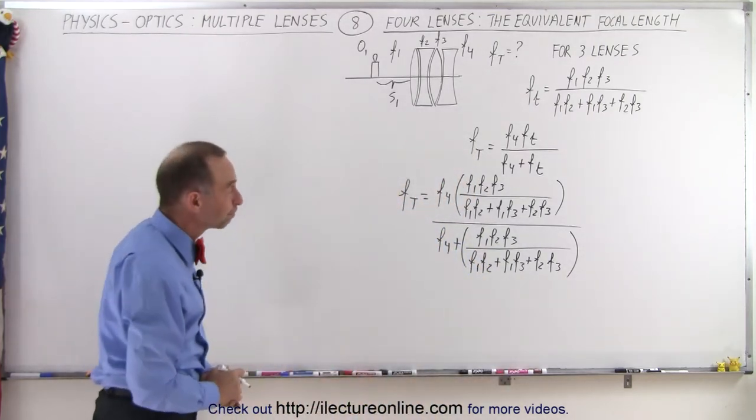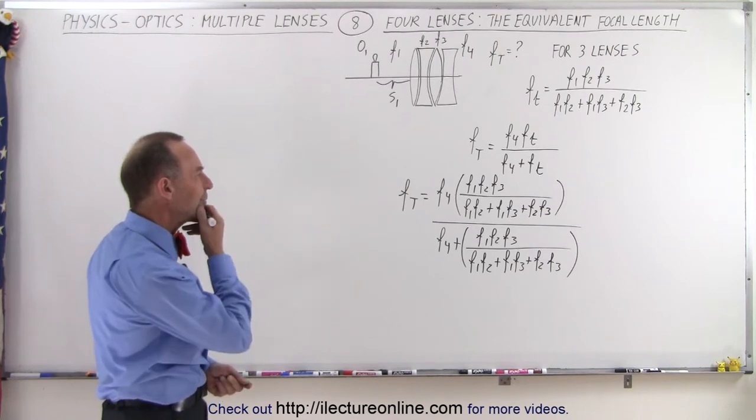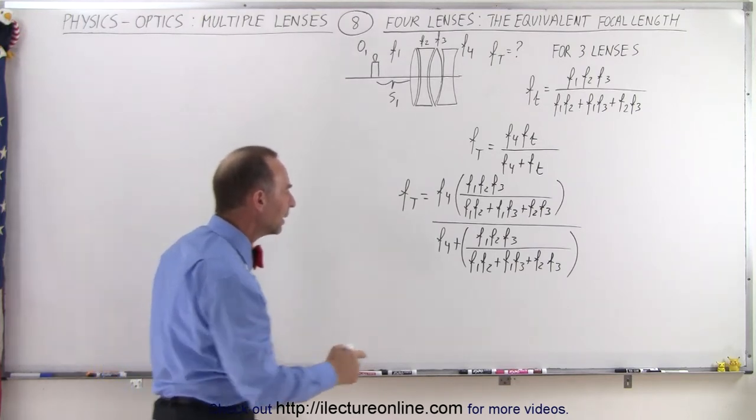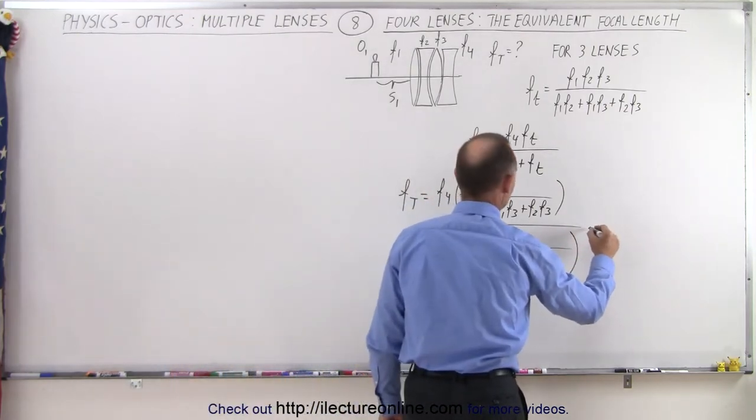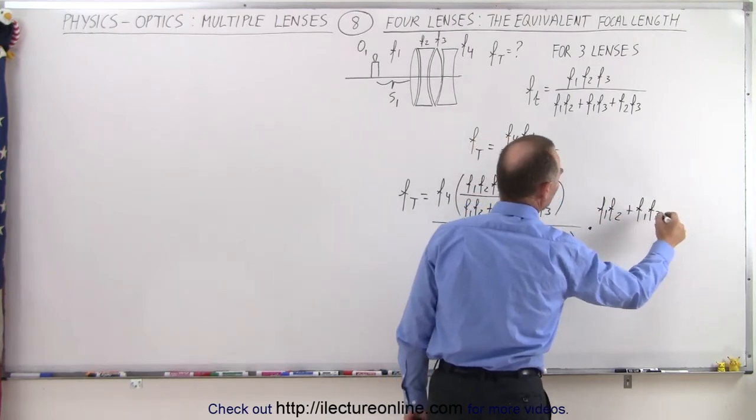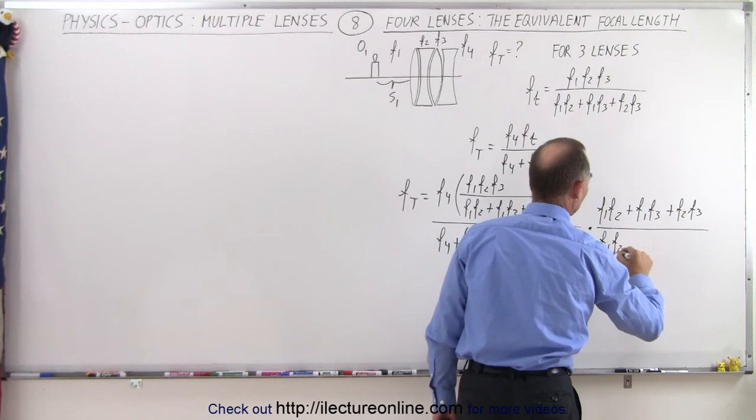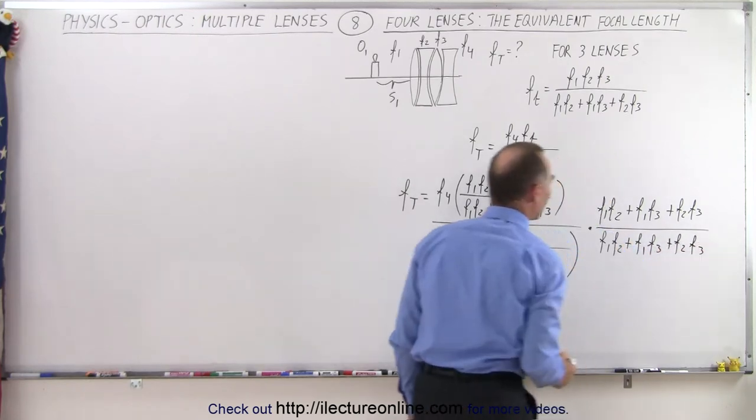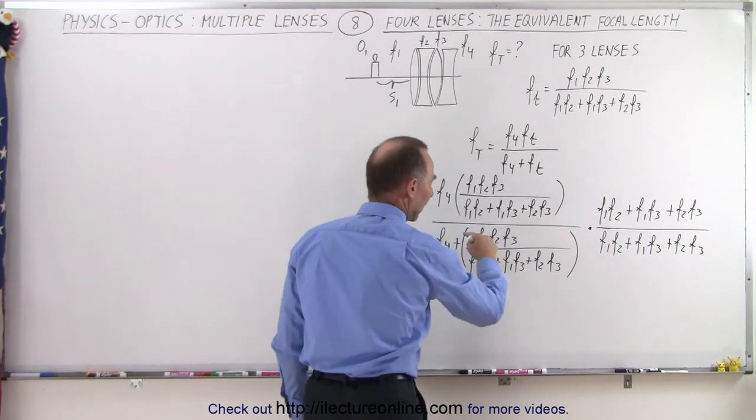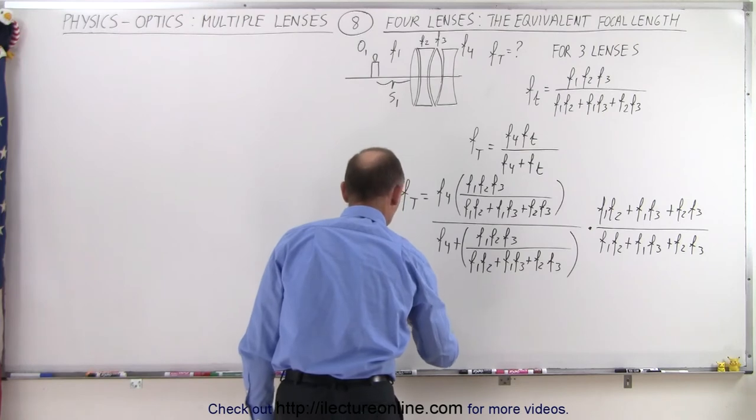Now we just have to simplify that. How about if we multiply both the numerator and the denominator by F1 F2 F3? Let's do that. So we're going to multiply the top by F1 F2 F3, and the whole thing divided by F1 F2 F3. When we do that, notice that this denominator will cancel out, and this will cancel out if I multiply this times the F4 right here.